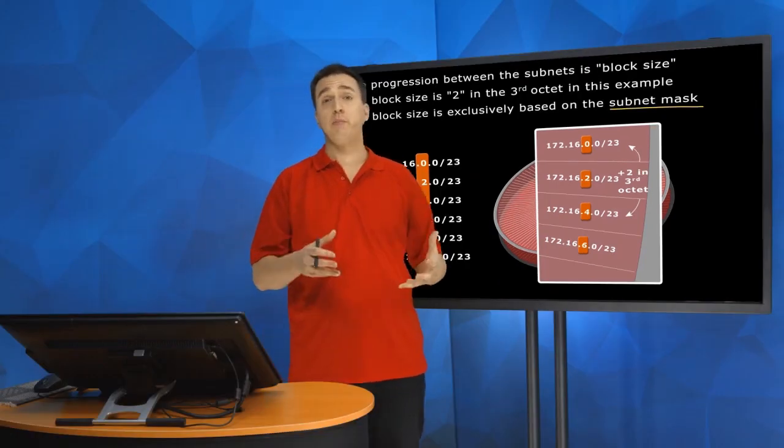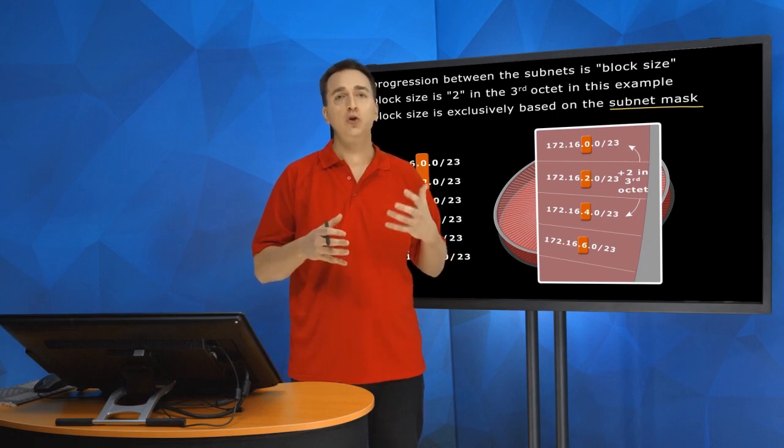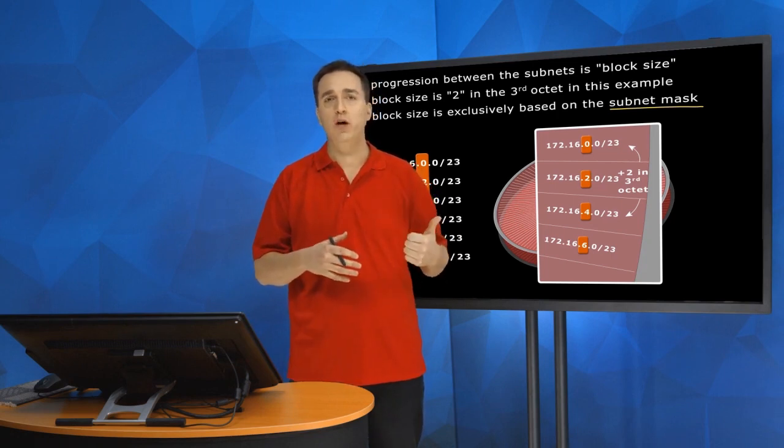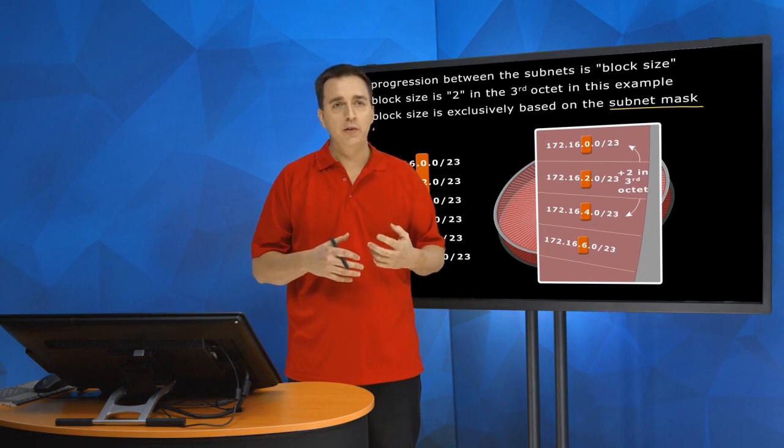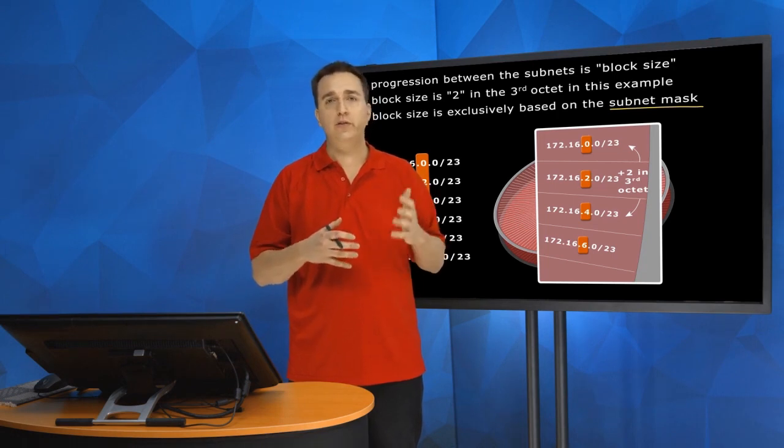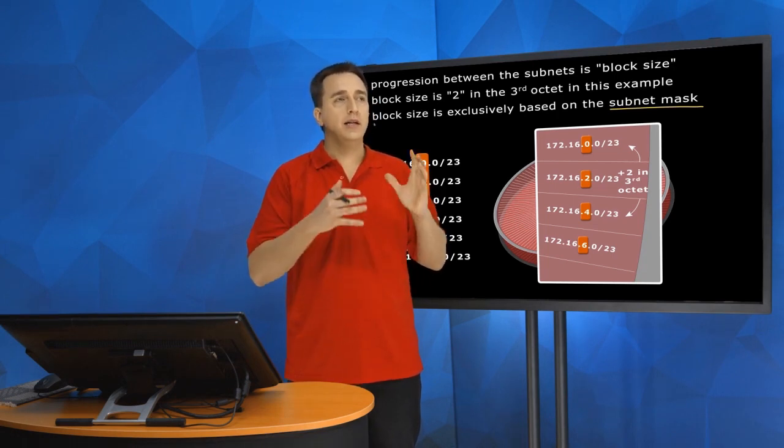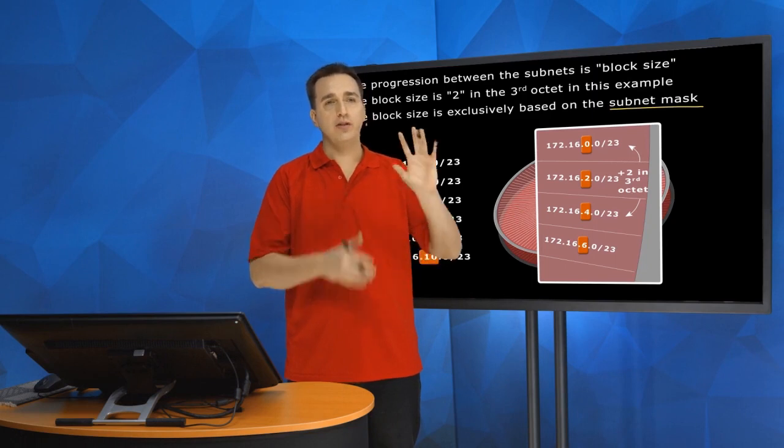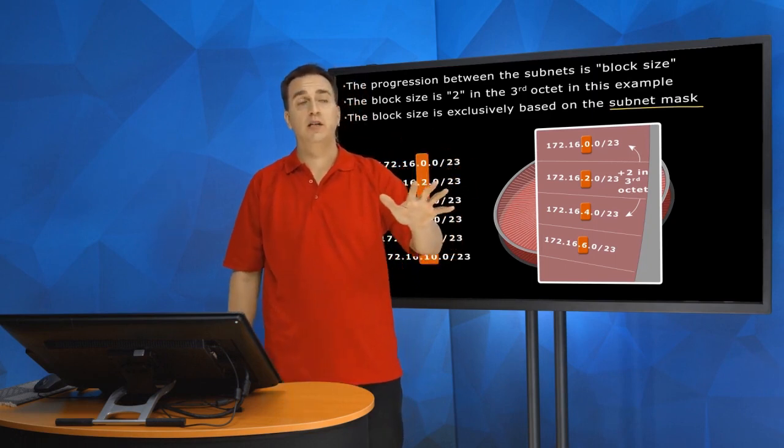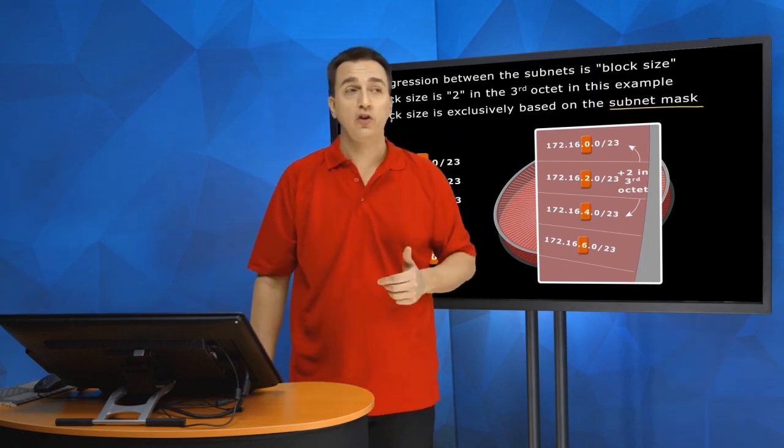So I want to show you two examples. I'm going to show you two different methods. Block size method one and block size method two. This is going to assist you in figuring out what is each of the subnet IDs. Because once you figure out the block size, you're going to be able to figure out your subnet IDs.